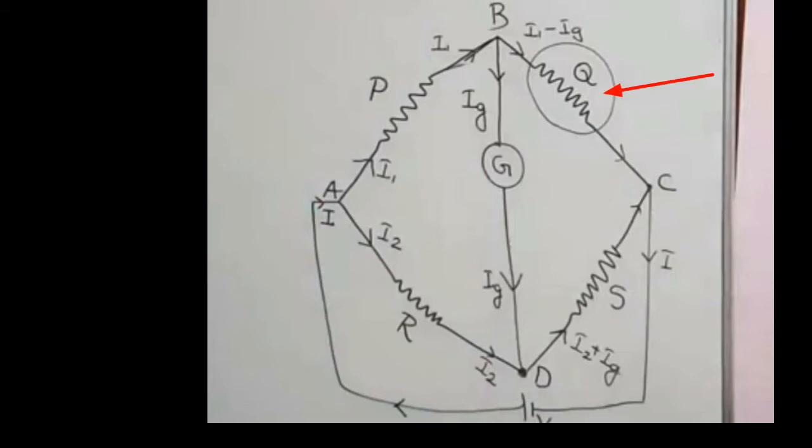The value of the Wheatstone Bridge involves the galvanometer. We have the term for V-D, and the term G is the galvanometer metric. It measures current — specifically, it detects when current is zero through the galvanometer branch.